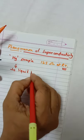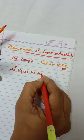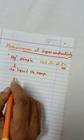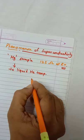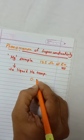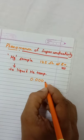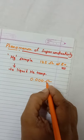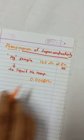it is observed that the resistance of the mercury sample drops to 0.0008 Ohm.